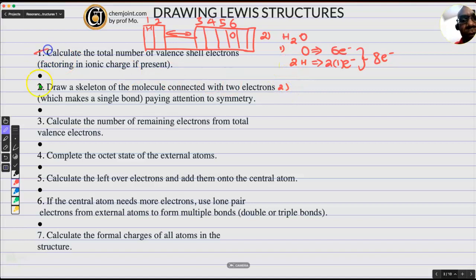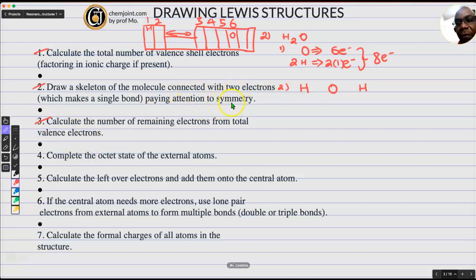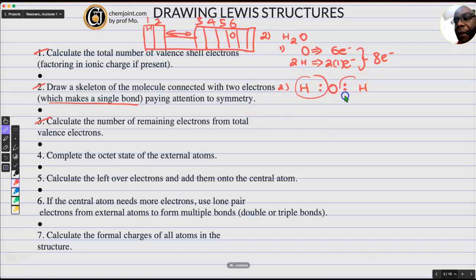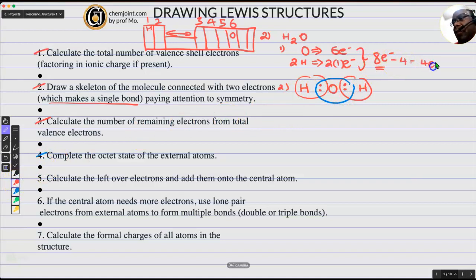Step number two, we have to draw connectivity in space, an arrangement of elements in space, paying attention to symmetry. Symmetry will have me put oxygen in the middle. Like I said, hydrogens and halogens are usually put outside. I'll put these two electrons there to at least make a bond. The shared electrons make a covalent bond. The hydrogens are happy — they are seeing the two electrons — but the oxygen is not happy because it needs to be octet. So we have to satisfy steps three and four. We have used four, we are remaining with four to account for.